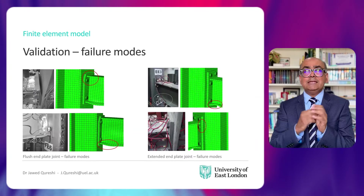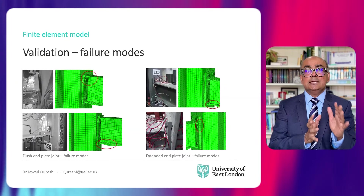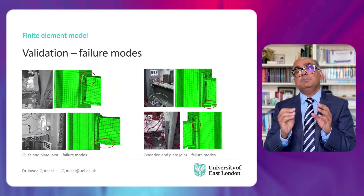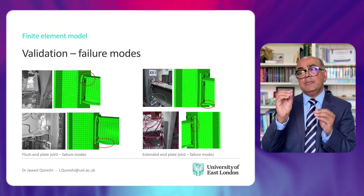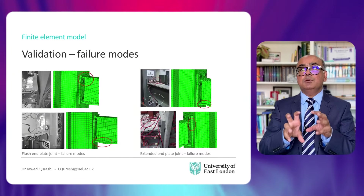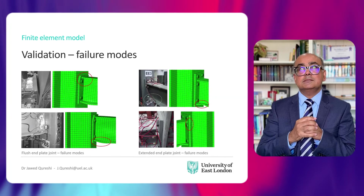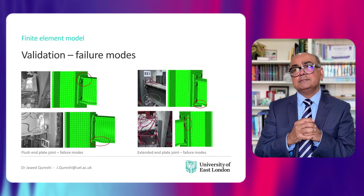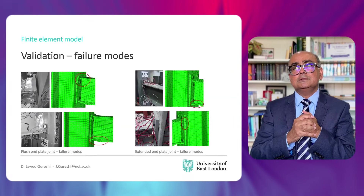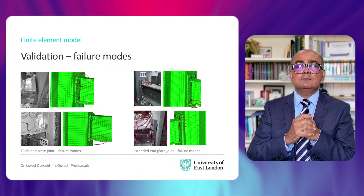The reason for this discrepancy is very difficult to establish. As mentioned, it could be bolt torque, different friction, or different bolt clearance. The failure modes exactly matched the experiments, which was very exciting. For flush end plates, bending of the end plate can be seen at the top and bottom of the beam, circled in this slide. For extended end plate, you can see slight buckling in the plate at the top and bottom corners of the beam flanges.